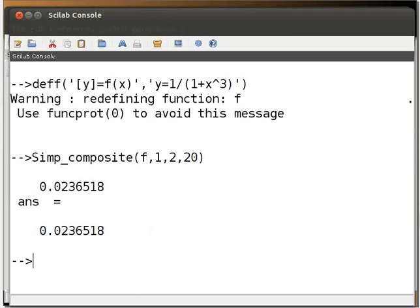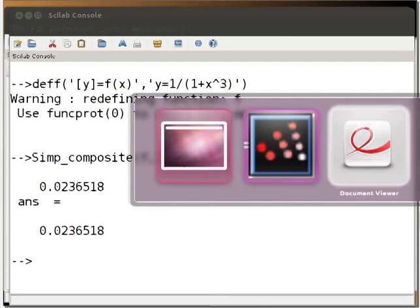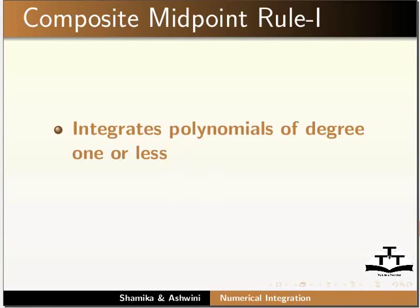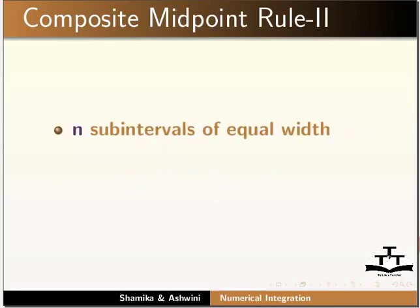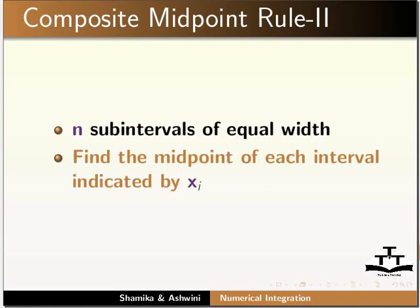Let us now look at the composite midpoint rule. It integrates polynomials of degree 1 or less, divides the interval [a, b] into sub-intervals of equal width, and finds the midpoint of each interval indicated by xi. We find the sum of the values of the integral at each midpoint.